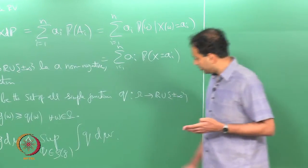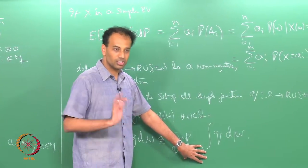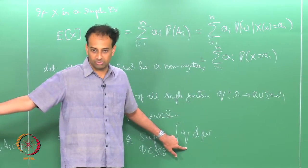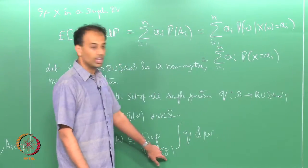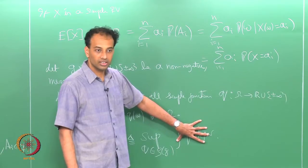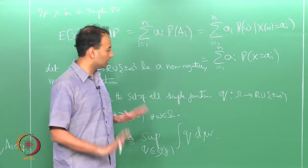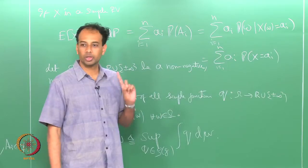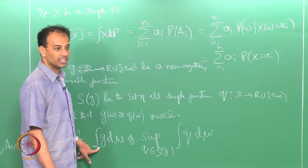Let me help you understand this definition. S of g is the collection of all simple functions which are less than or equal to g, and you know how to evaluate integral q d mu where q is a simple function. You go ahead and evaluate the integral q d mu for all q in S of g — for each q you get a number. As you vary q through S of g, you get a collection of real numbers, or possibly infinity. That collection of numbers has a supremum, and that supremum is defined as the integral of g d mu.